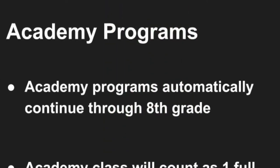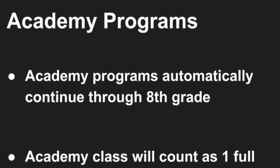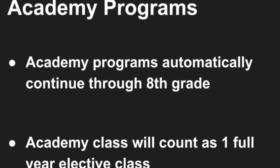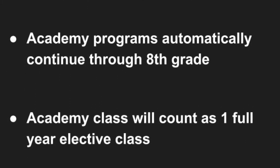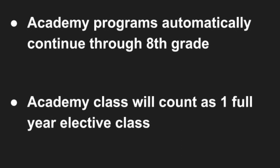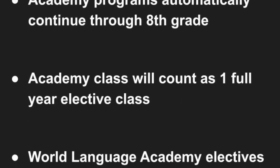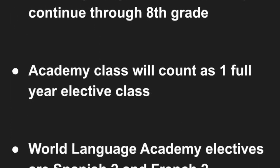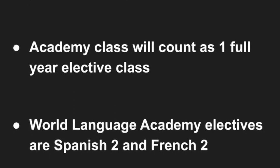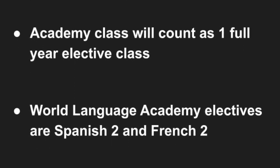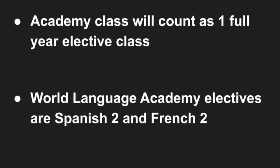If you are currently in an academy program, you will automatically continue in that program — you do not need to reapply. Your academy class will count as one full-year elective for 8th grade. If you are in the World Language Academy, your elective classes will be Spanish 2 and French 2, and you will not need to choose any other elective classes.